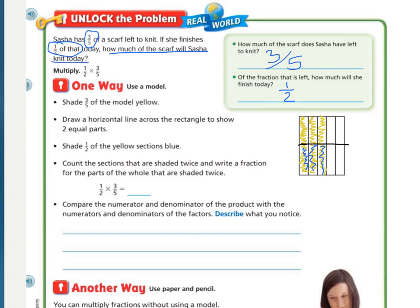We count the sections that are shaded twice, and write the fraction for the parts of the whole, the whole rectangle, that are shaded twice. How many pieces are shaded twice? There's one, two, three. So, I'm going to write three.